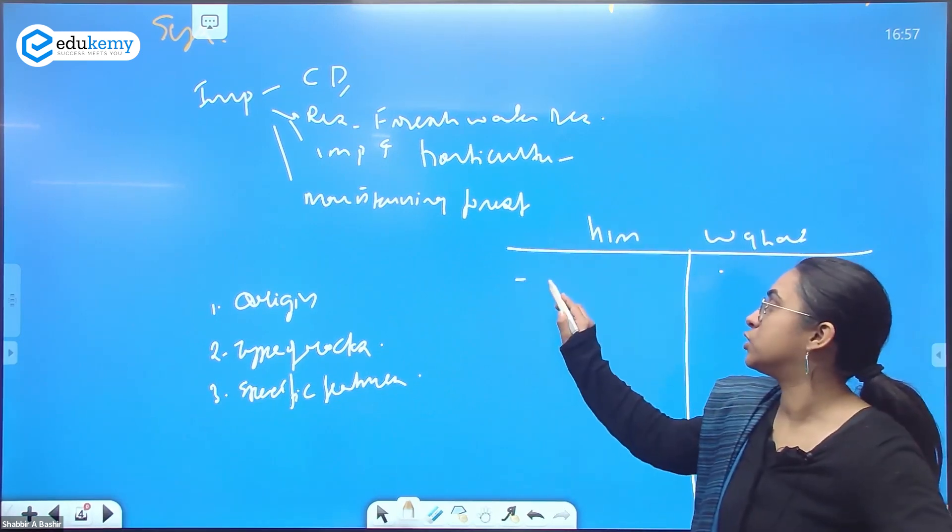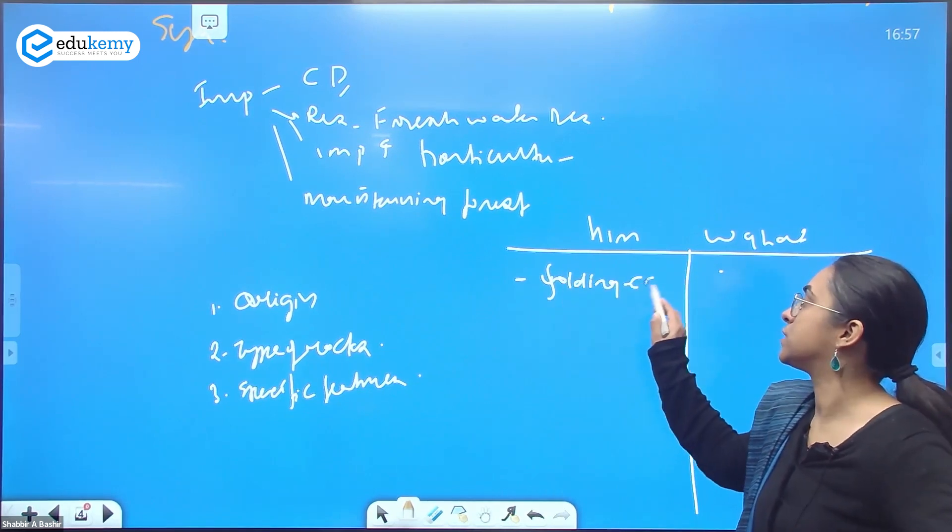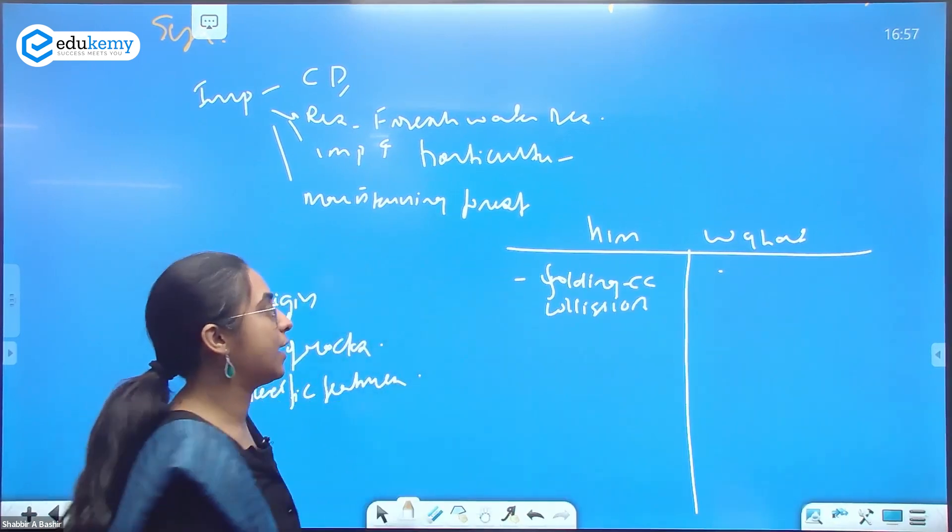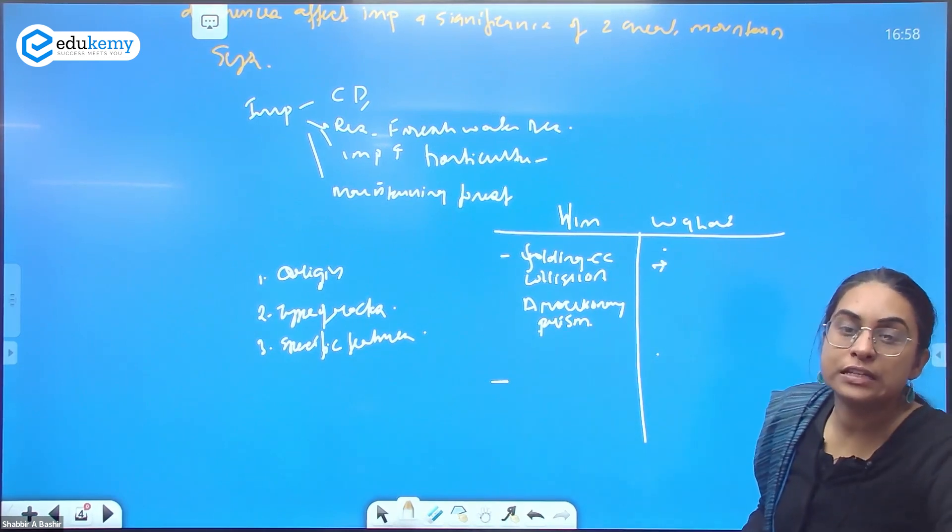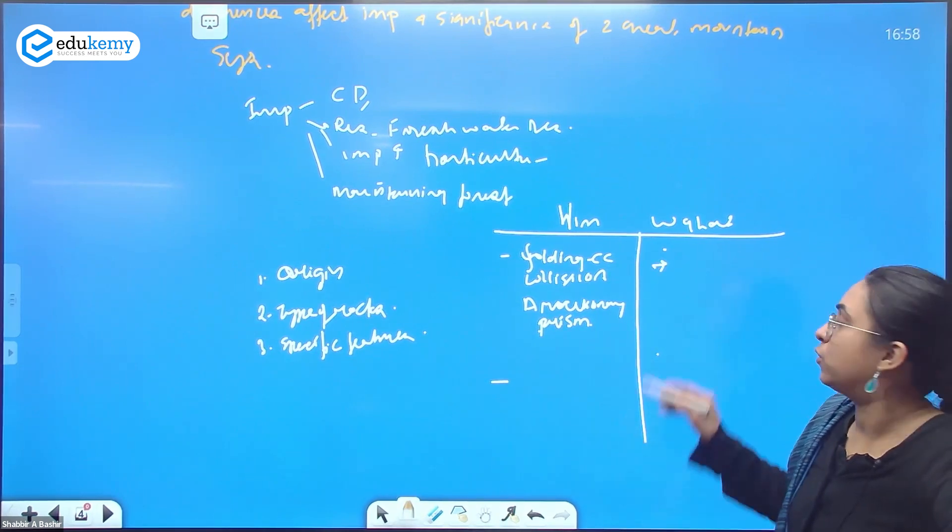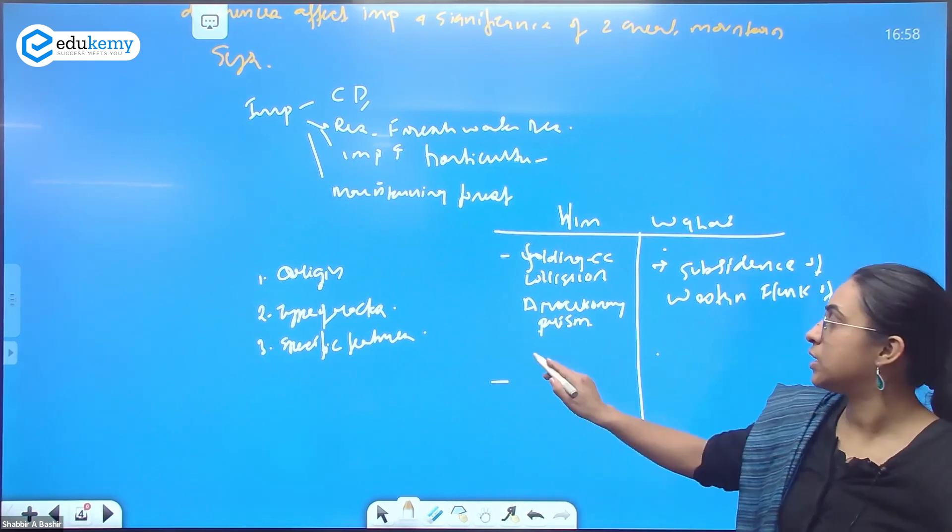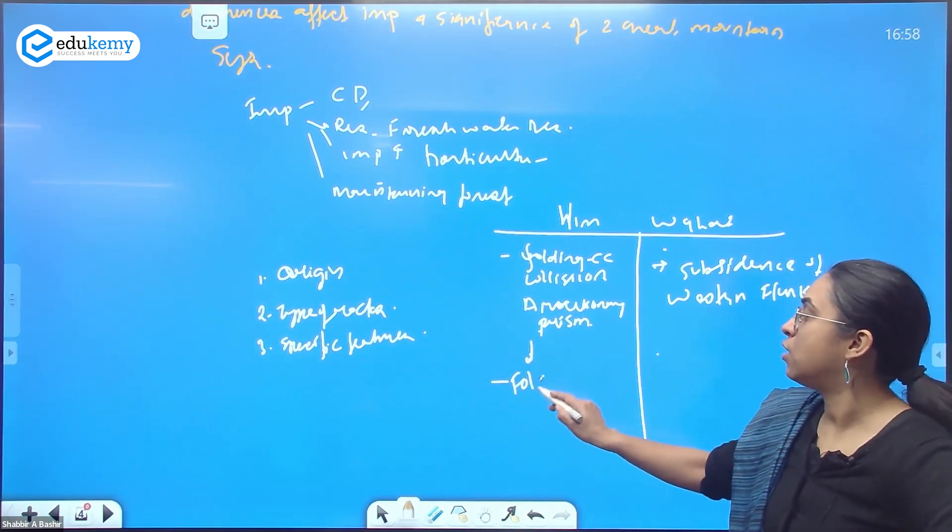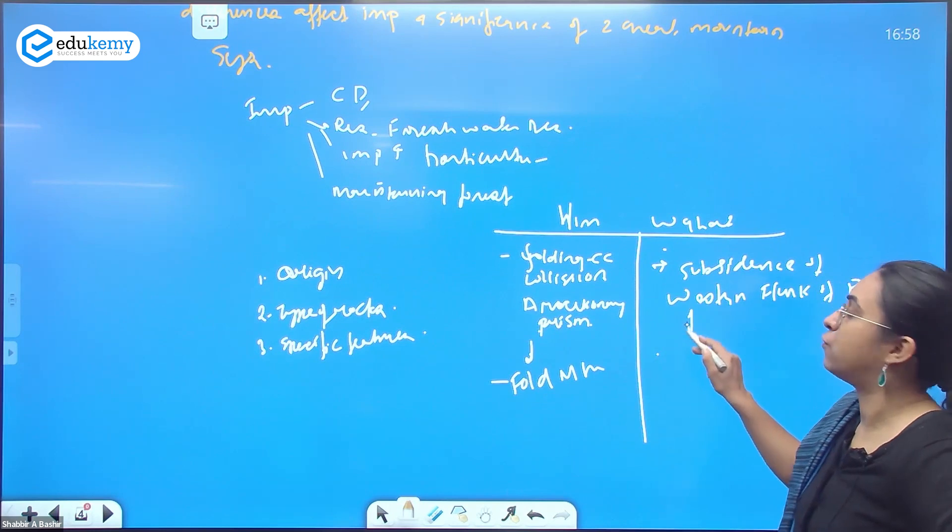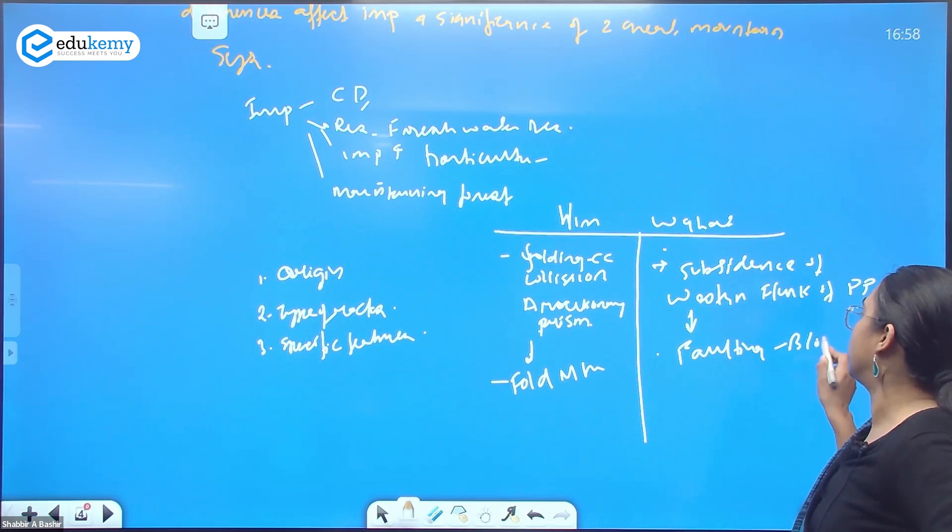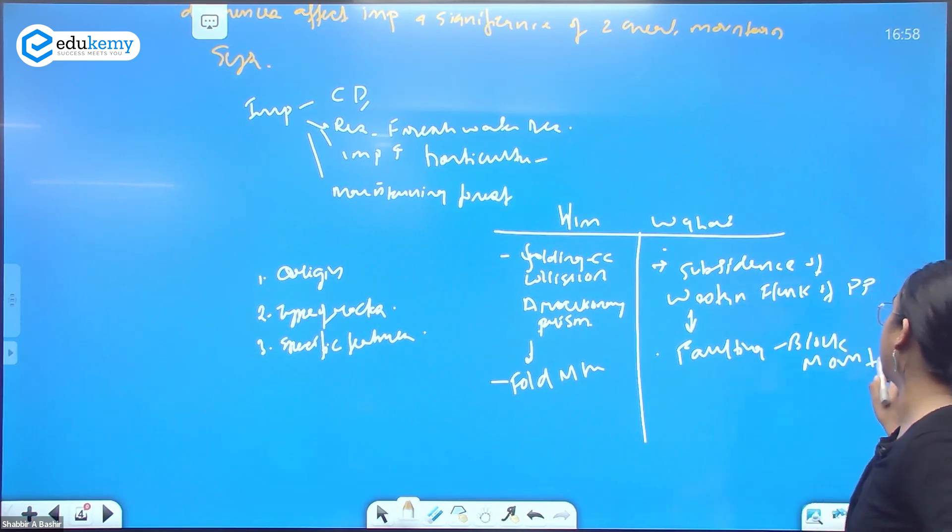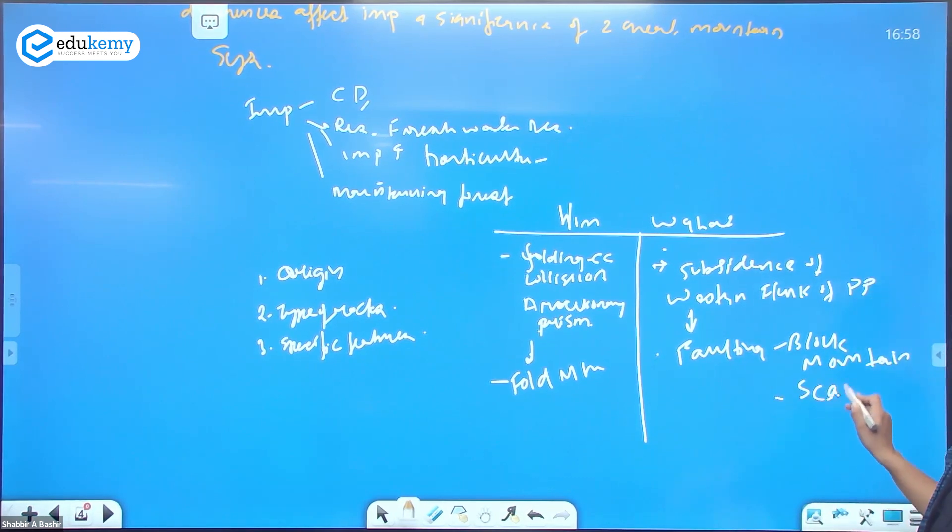When we talk about Himalayas and Western Ghats, what has been the origin of Himalayas? You have folding because of continent-continent collision. We talk about accretionary prisms. Here you talk about subsidence of the western flank of the peninsular plateau. When you talk about geological structures, these are fold mountains because they have been formed like this. They are fault mountains, and therefore these are block mountains or they can also be called scarps. They have a very steep face, a very sharp scarp.